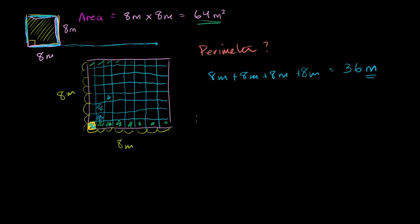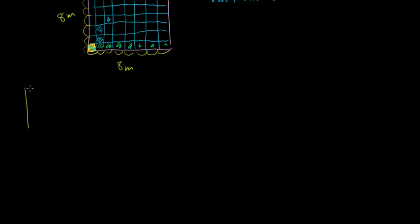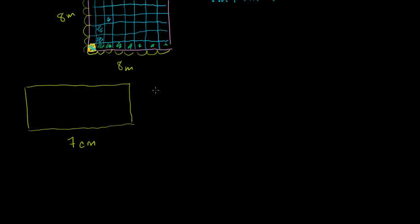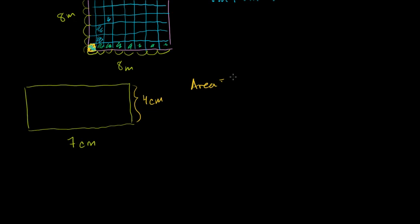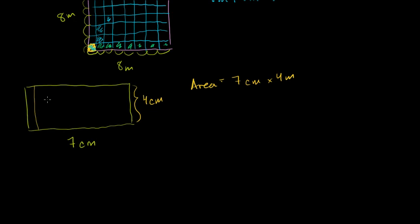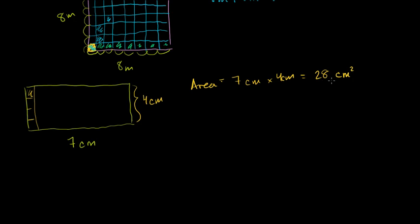Let's make it a little bit more interesting. What happens if instead of a square, I have a rectangle? Let's say that this side over here is 7 centimeters, and the height right here is 4 centimeters. So what is the area of this rectangle going to be? It's going to be 7 centimeters times 4 centimeters. We could draw 7 rows, and each of them is going to have 4 square centimeters. So it's equal to 28 centimeters squared.